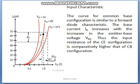Now we discuss the input characteristics of common emitter configuration. The curve is plotted between base current and base-emitter voltage. The base current IB increases with increase in base-emitter voltage. The input resistance of common emitter configuration is comparatively higher than that of common base configuration.